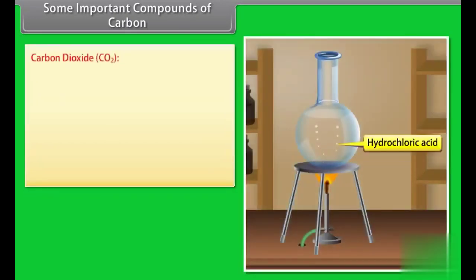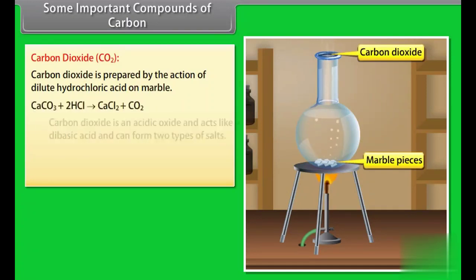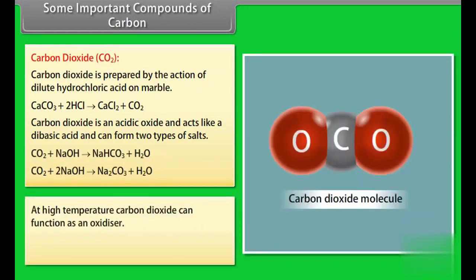Carbon dioxide. Carbon dioxide is prepared by the action of dilute hydrochloric acid on marble. Carbon dioxide is an acidic oxide and acts like a dibasic acid and can form two types of salts. At high temperature, carbon dioxide can function as an oxidizer.